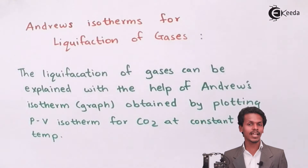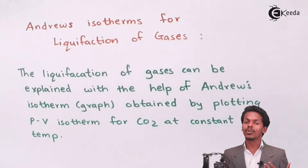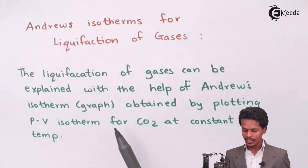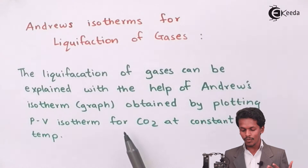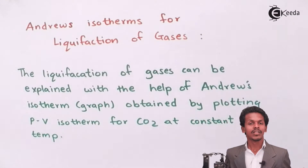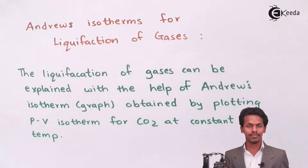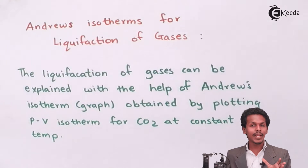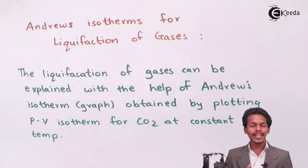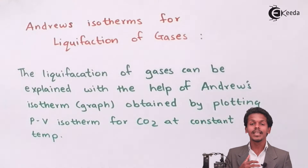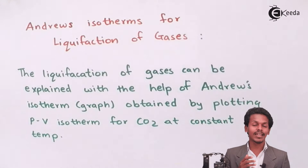Andrew's isotherm is a graph related to constant temperature, with varying pressure and volume. It is obtained by plotting pressure versus volume isotherms for carbon dioxide at constant temperature. The overall study is conducted at constant temperature while changing the values of pressure and volume, in order to compress or liquefy a particular gas.